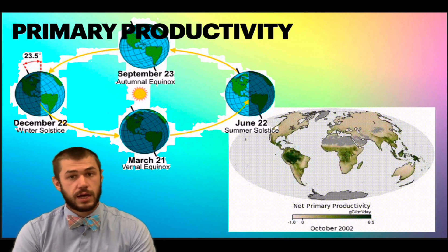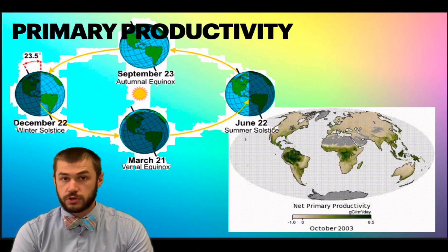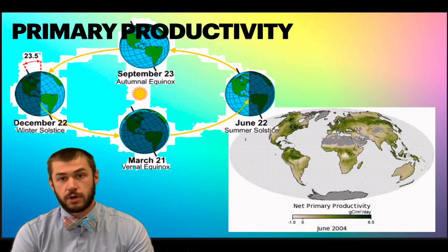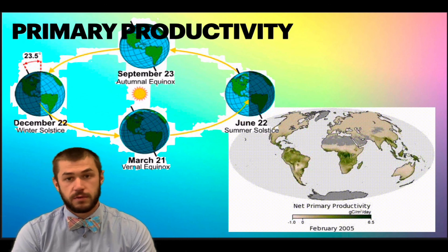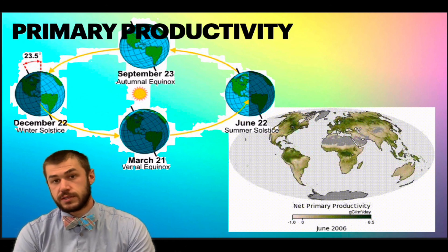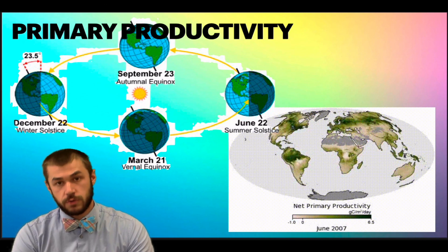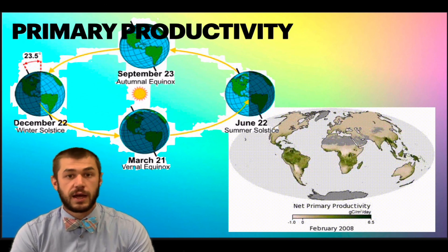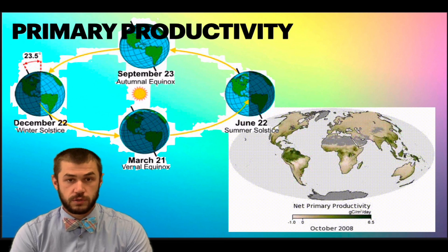And so because of that, we can actually map primary productivity on the earth as it changes with seasons. So this GIF is showing that where it's dark green is where more primary productivity is happening and where it's brown there's less primary productivity happening. And you can see it cycles from the northern to southern hemisphere as the earth goes through the seasons.